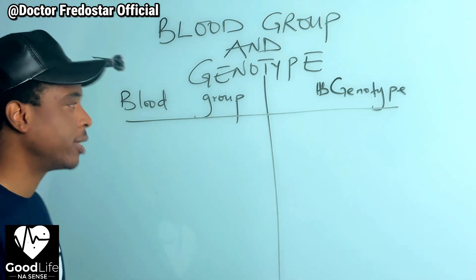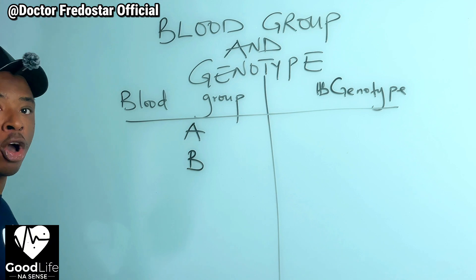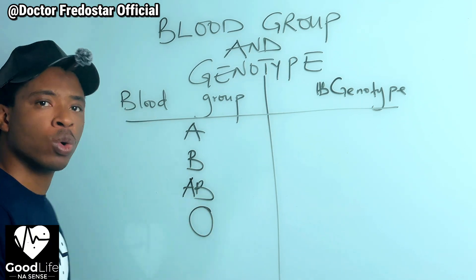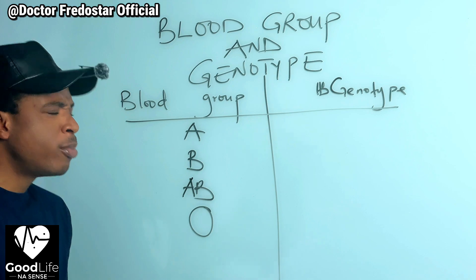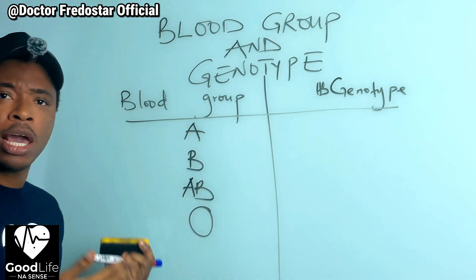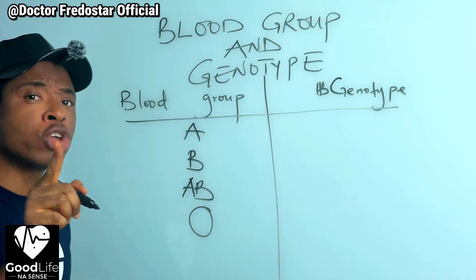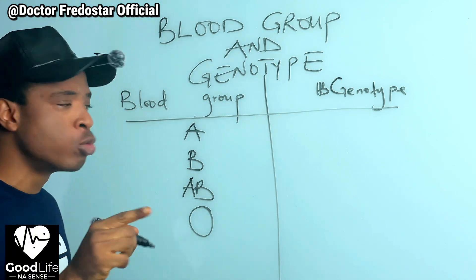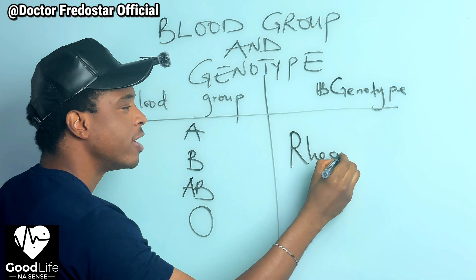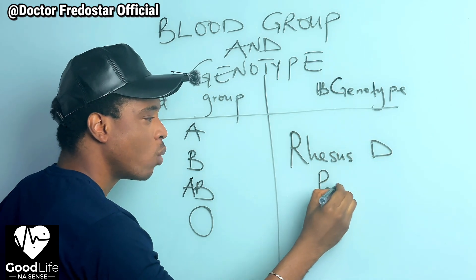What are the different types of blood group? Number one: A. Number two: B. Number three: AB. Number four: O. So the blood groups are A, B, AB, and O. Now whenever you check your blood group, they will tell you your Rhesus — Rhesus D positive or Rhesus D negative.